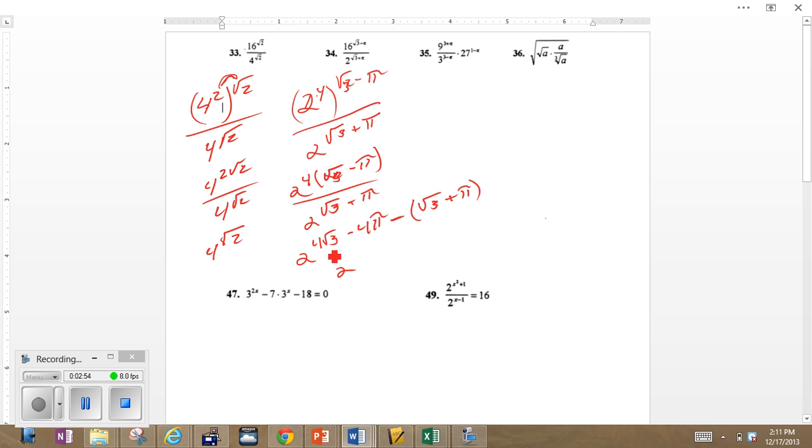So now we got 2 to the power 4 root 3 minus root 3, that's 3 root 3, negative 4 pi minus pi is minus 5 pi. So that's our answer. I know it doesn't look like something that you're used to seeing, but regardless, it's the answer.